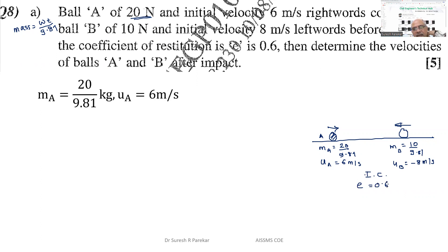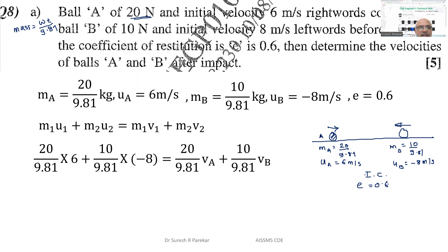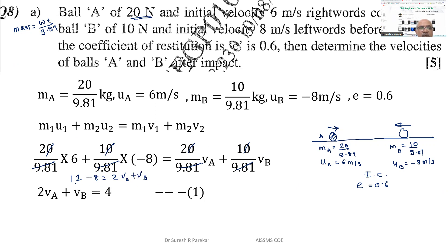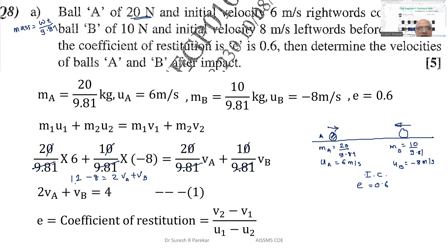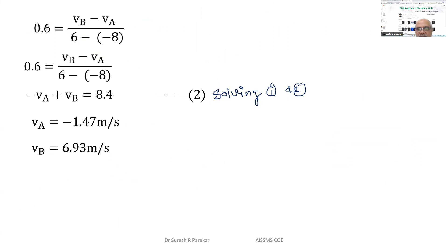The 9.81 cancels from the momentum equation. Substituting values: 20×6 + 10×(-8) = 20*vA + 10*vB, giving equation 1: 2*vA + vB = 4. From the restitution equation, we get equation 2. Solving both: vA = -1.47 m/s and vB = 6.93 m/s.